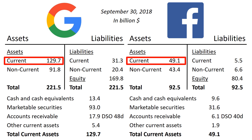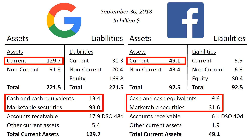What jumps out at us in this overview is the very large balances of cash and cash equivalents and marketable securities. Both companies are very cash rich. We will find out why once we get to the bottom right of the balance sheets — equity — which is the offset on the other side of the balance sheet.